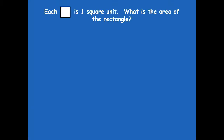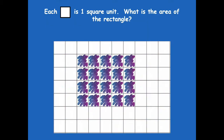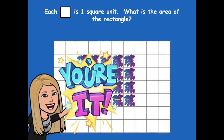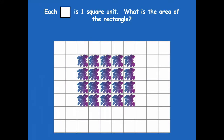Alright friends, let's look at this. Each square is one square unit — what's the area of the rectangle? Go ahead and pause the video and count it. What'd you guys come up with? Yeah, 20 square units. You could have counted each one, or you could have said: I know there are four rows and five in each row, so four times five equals 20. You can use your multiplication to solve that too.